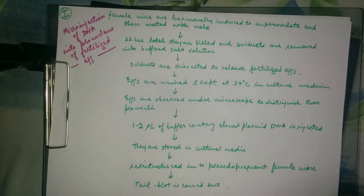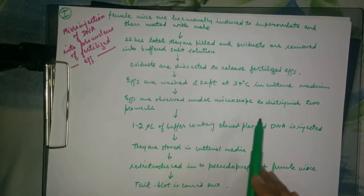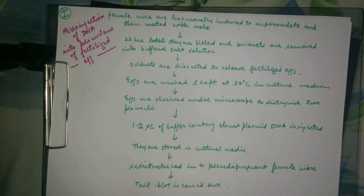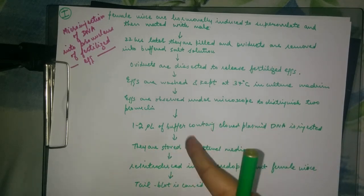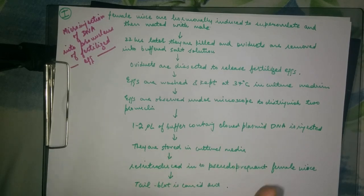The eggs are washed and kept at 37 degrees Celsius in cultured media. The eggs are then observed under microscope to distinguish between the two pronuclei. The two pronuclei means one is from the female mouse and the other is from the male mouse. The male pronucleus is larger than the female pronucleus, so it is chosen for injection.